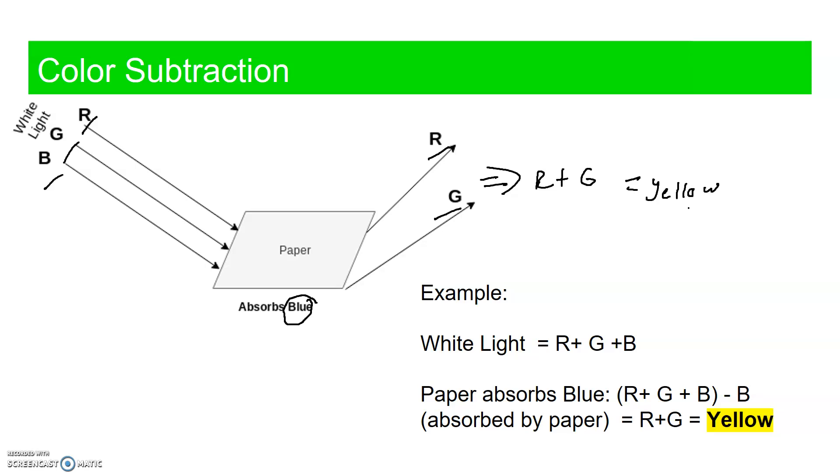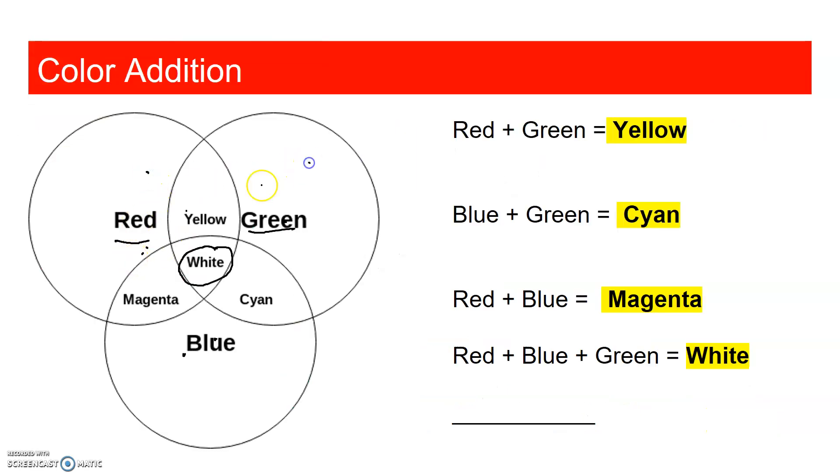We can go back to our Venn diagram here. Red and green make yellow.